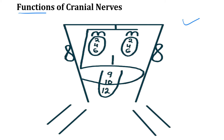This is the best way to remember the functions of all 12 cranial nerves. First you draw a shape that corresponds to your nose — this is cranial nerve 1, the olfactory nerve, which is a purely sensory nerve and gives the sense of smell.